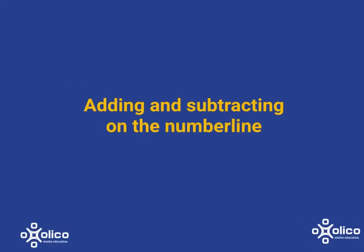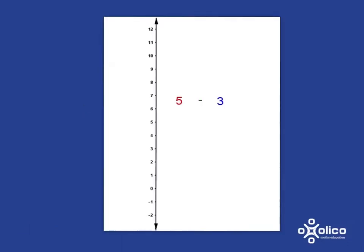We're going to work on adding and subtracting using the number line, starting with a calculation from grade 1. When we do a calculation like 5 subtract 3, we need to see that we're going to start at 5, then decide whether we're going up or down — subtraction means we go down, addition means we go up — and then go 3 steps down. We establish our starting point of 5, go down 3 steps, and end at 2. So 5 subtract 3 gives us 2.